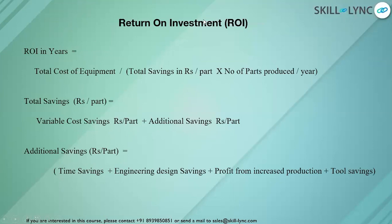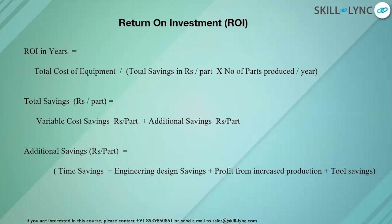Return on investment for additive manufacturing can be calculated using the formula: cost of the 3D printer divided by total savings (in rupees per part) multiplied by the number of parts produced per year. Total savings equals variable cost savings plus additional savings. Variable cost savings include reductions in filament cost and tooling cost. Additional savings include time savings from reduced build time, faster new product introduction, energy savings, and engineering design savings — all contributing to overall ROI.